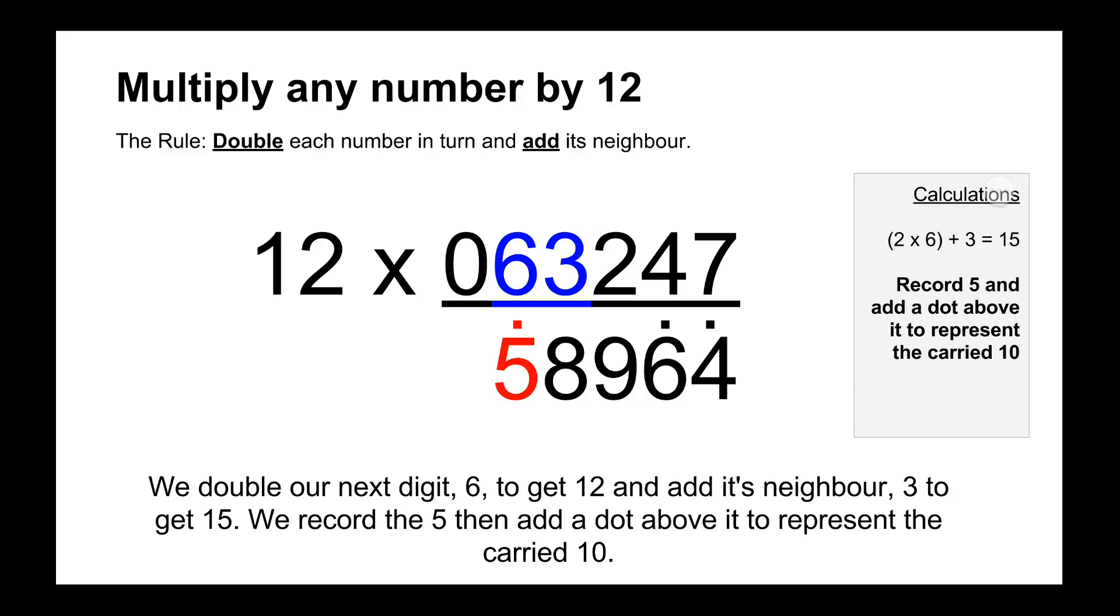And then going across to the 6 we do 6 doubled is 12 plus 3 its neighbour is 15. So we write down the 5 and then we record a dot above the 5 to represent the 10.